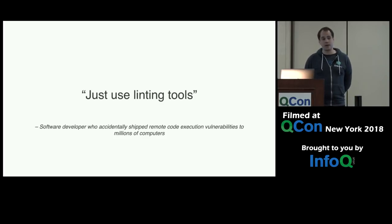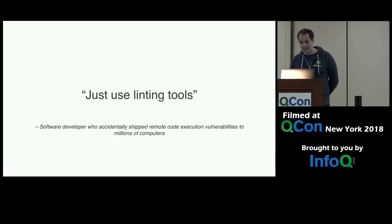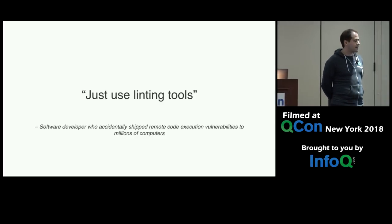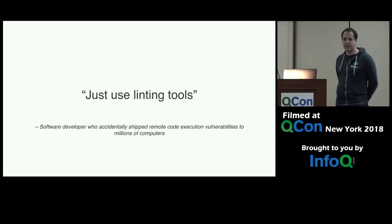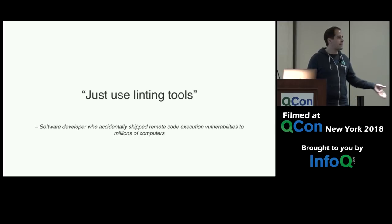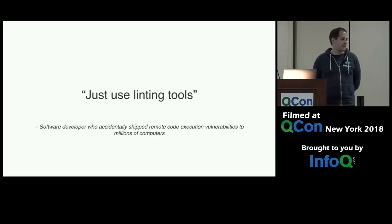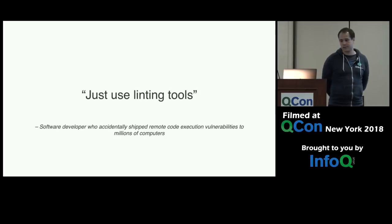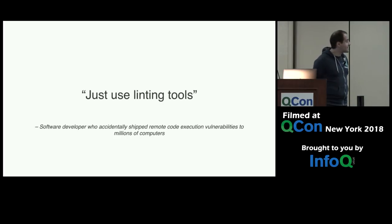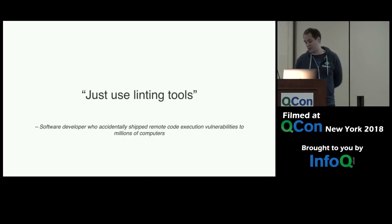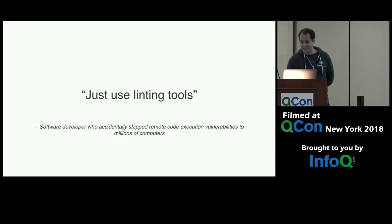I've definitely written a bug or two in my life — maybe I'm the only one, but I don't think so. If you ask experienced C or C++ users, some answers might be: it's actually not that hard when you use the right subset of the language. But ask different people what that subset is and you might get different answers. Or you might hear: you can just use linting tools — those will catch your bugs. Well, there are linting tools and they work pretty well, but they're not infallible. It really just takes one or two bugs to end up in not-so-great situations.